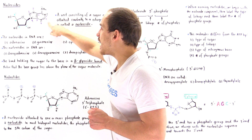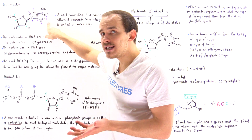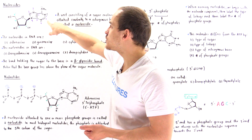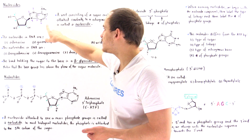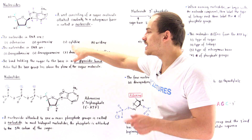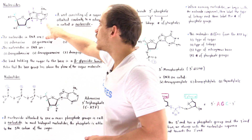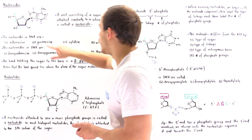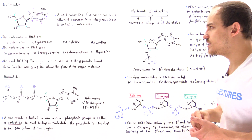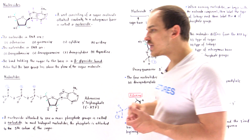If this base was guanine, then we'd call it guanosine. If this was cytosine, we'd call it cytidine. And if this was uracil, we'd call it uridine.